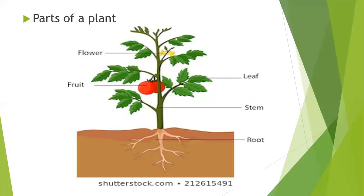Root, stem, leaf, flower, fruit. They have also different functions too, just we discussed before. Yes, now I hope you all know about the parts of a plant and its different functions.